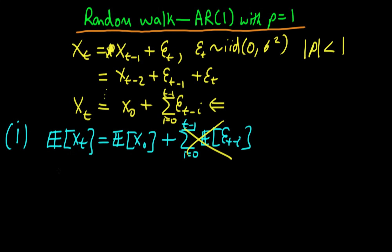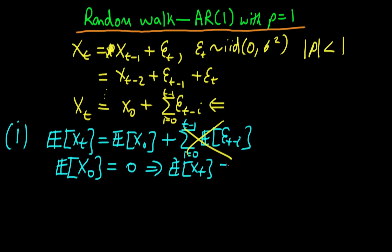Since each Et is IID with a mean of 0, this second term is all equal to 0. So we set the expectation of X0 equal to 0, which implies that the expectation of Xt equals 0. So we have a process which is constant in mean — a random walk is not non-stationary for that reason.